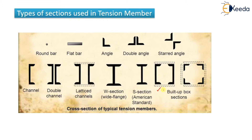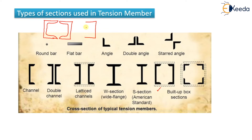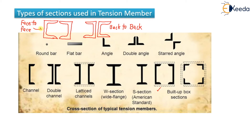This is a type of built-up box section. Consider that you have one channel section and another channel section. These can be placed face to face, or in another arrangement where they are placed back to back — meaning their backs are connected to each other. So we have two channels placed face to face, and two channels placed back to back.